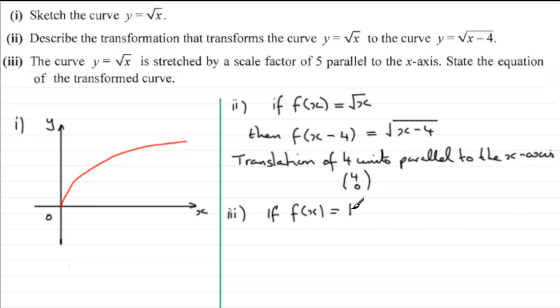It is f of one-fifth of x, okay, not f of five x, it's the kind of inverse if you like, one-fifth, okay, one-fifth of x. So that means we need to replace the x in here with one-fifth of x. So you've got the root of one-fifth x, or you could have x over five, as long as that root covers everything, okay.